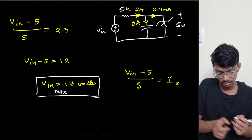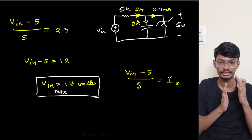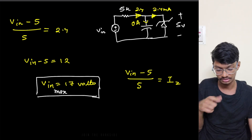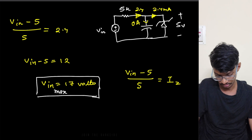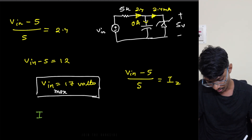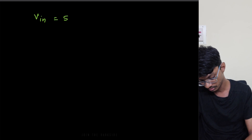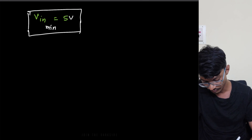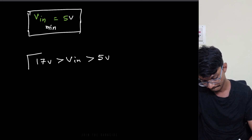For the minimum Vin: Iz cannot be negative — if it were, the circuit no longer works as a voltage regulator and the output won't be a constant five volts. The minimum condition is Iz = 0, which gives Vin_min = 5 volts. Therefore, the valid range of input voltage is 5 volts to 17 volts.